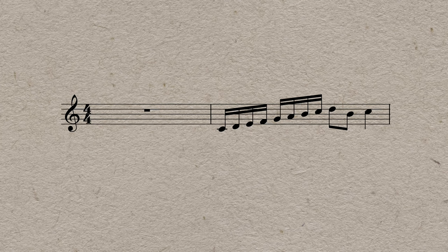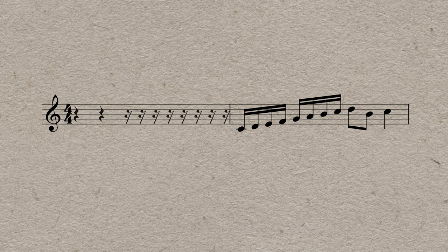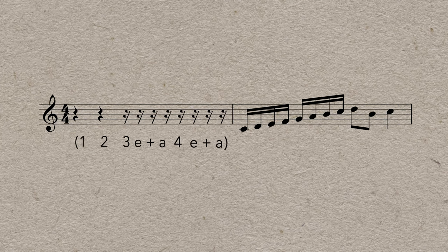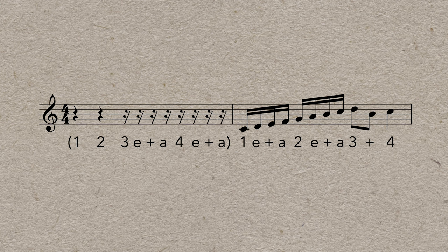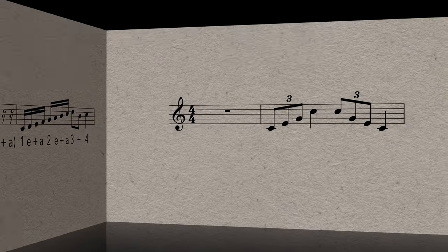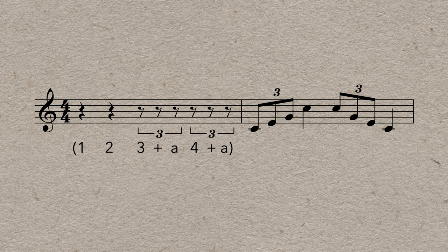And this works equally well for other subdivisions. For sixteenths, you could count the whole bar ahead in sixteenths or maybe just the last beat or two. One, two, three and, four and, four and. And the same thing with triplets. One, two, three and, four and.